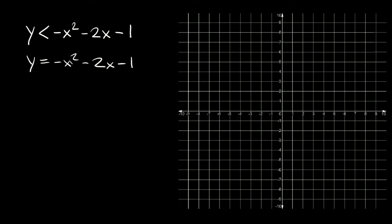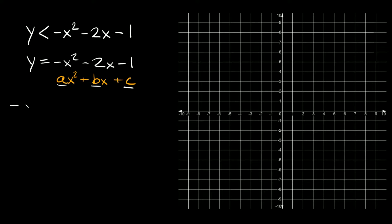Something you might notice right off the bat is that this is already in standard form. Standard form is ax squared plus bx plus c, where a, b, and c are just your coefficients — the numbers in front. In order to graph this quadratic equation, the first thing we can do is find the vertex. To do that, we can first find the x-coordinate of the vertex using this little formula right here: negative b over 2a.